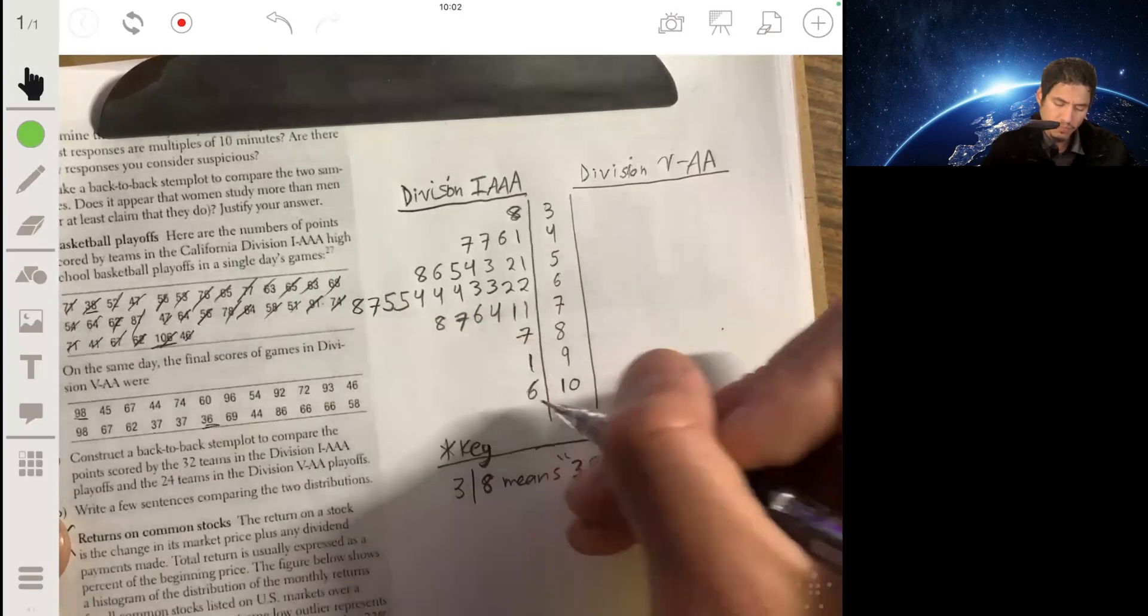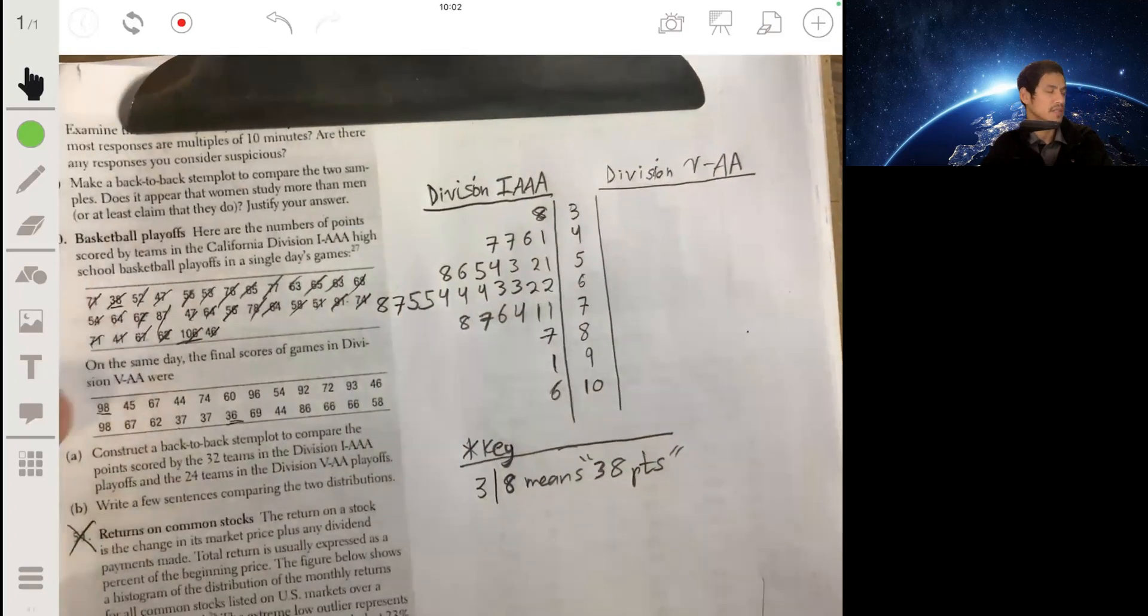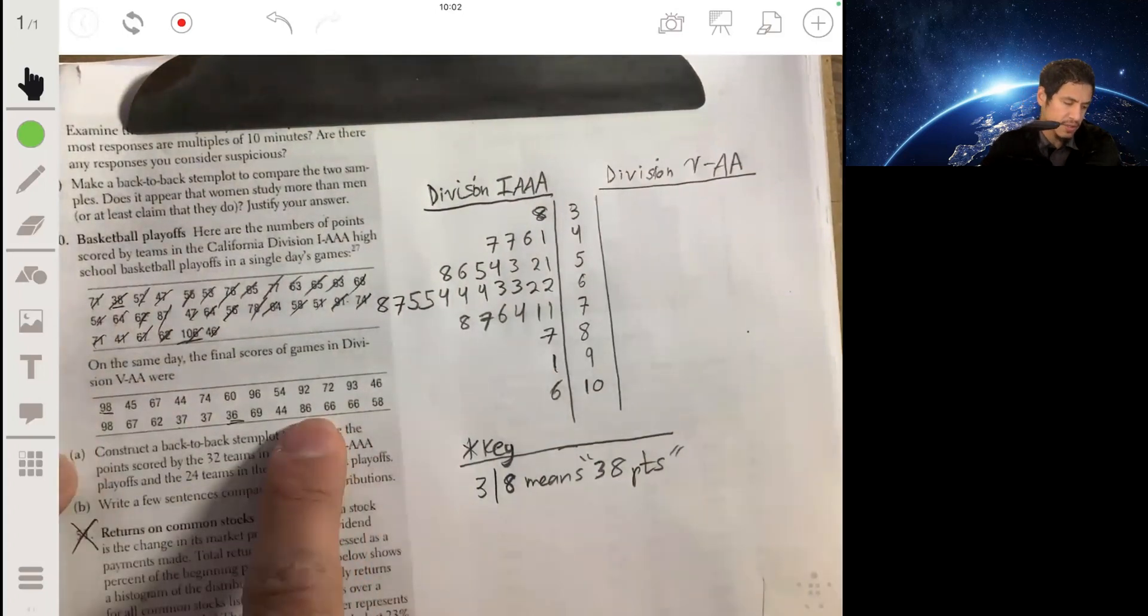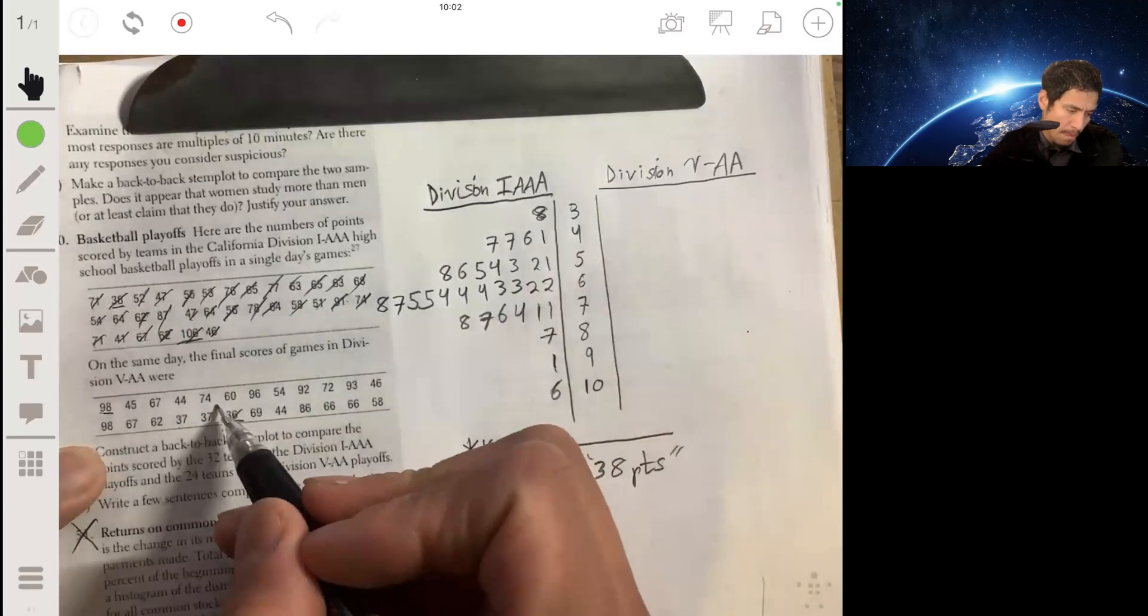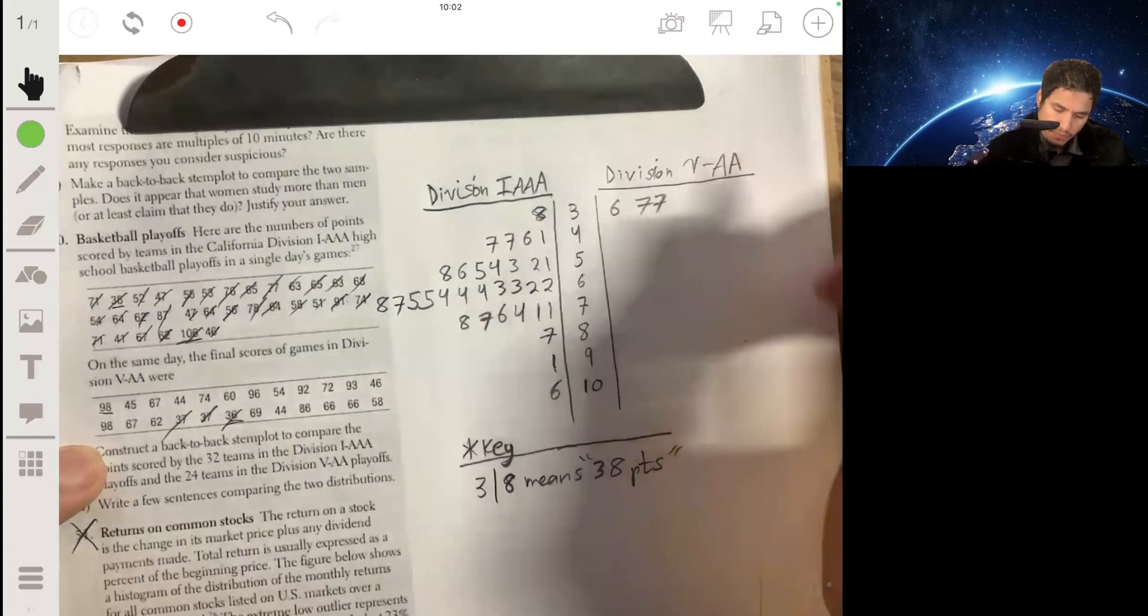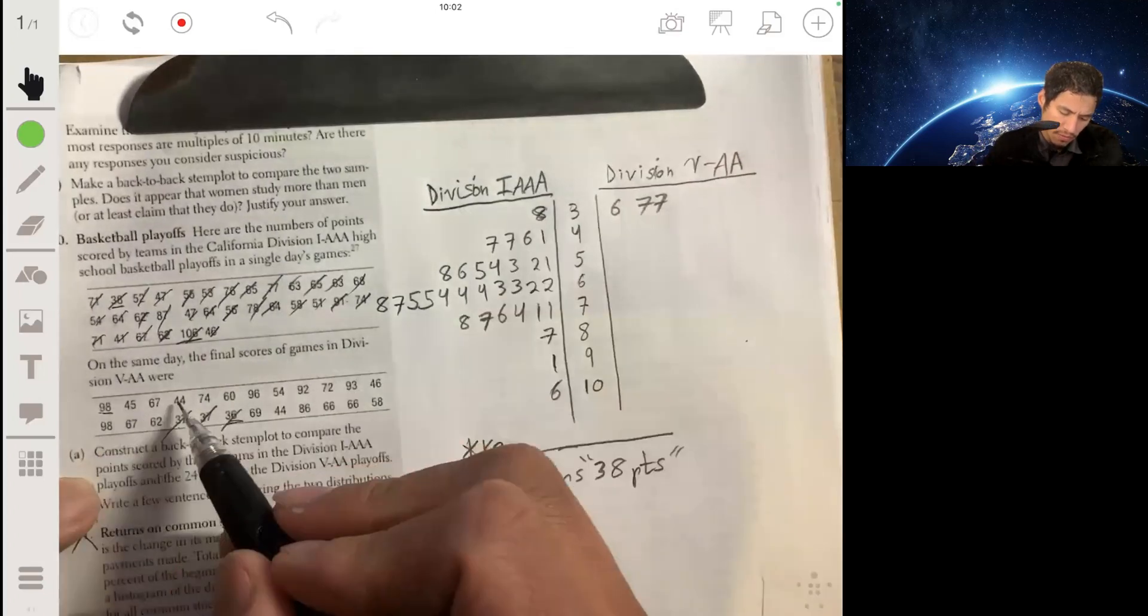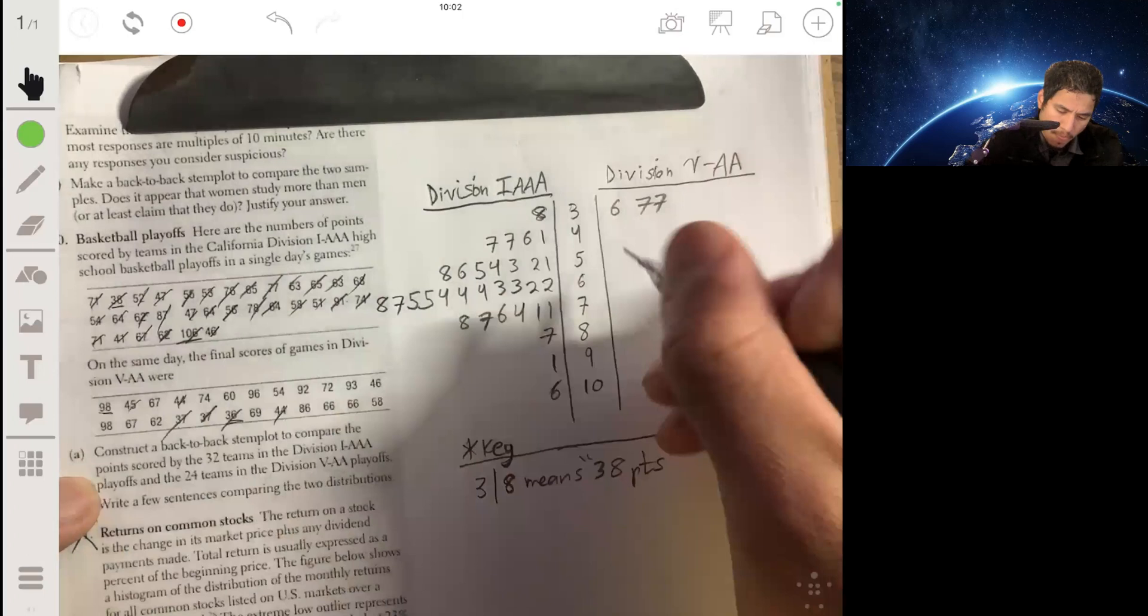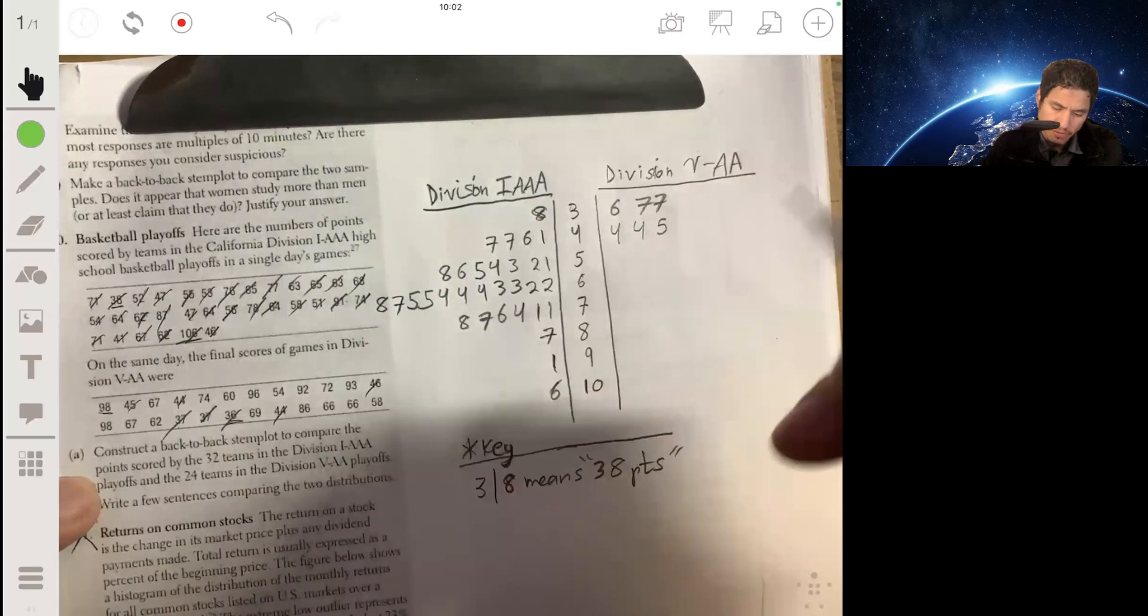Now let's finish this set, and there's less here so this should be quicker. Starting again with the 30s, I think there are a couple: we have 36, 37, 37. 40s: two 44s, 45, 46.